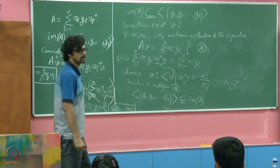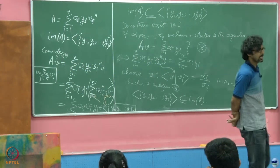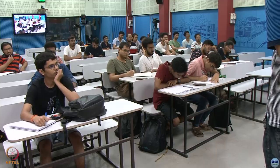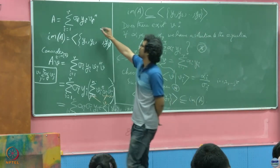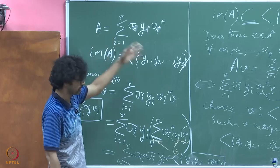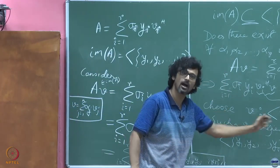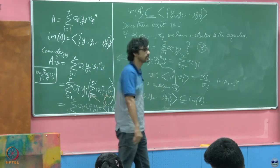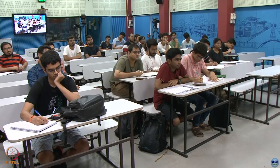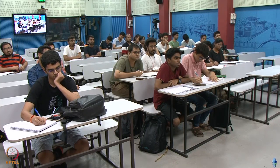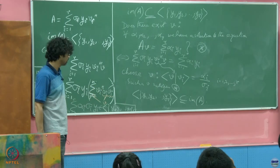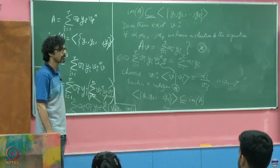So the dimension of the image of A is r. Any rank-r matrix can be written as a sum of r rank-1 matrices. The number of non-zero singular values is exactly the rank of the matrix. The singular value decomposition allows you to deal with most properties of matrices in an elegant fashion — many properties become very apparently obvious.